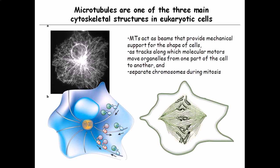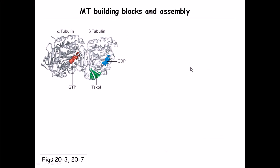Microtubules are important in shaping the cell as well as in chromosome separation. Let's begin with the structure of microtubules — the building blocks and the assembly. Microtubules are generally produced in eukaryotic cells by the tubulin protein molecule. There are two major types: alpha tubulin and beta tubulin. There is another type called gamma tubulin, which we'll discuss later.